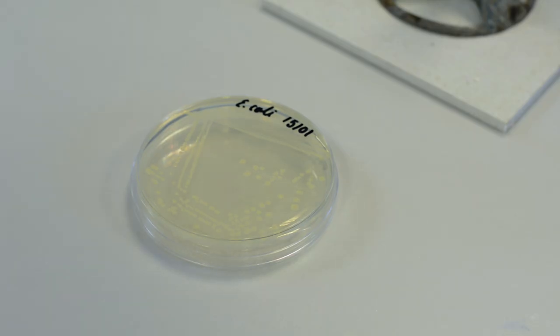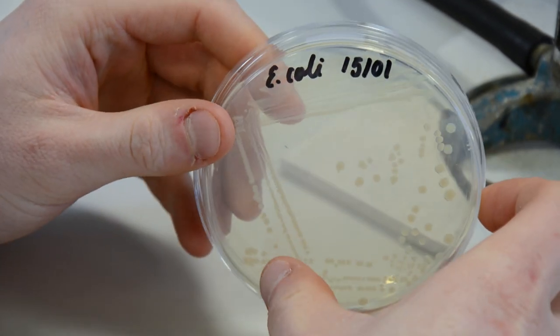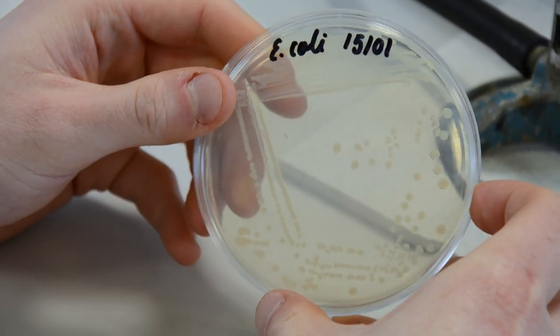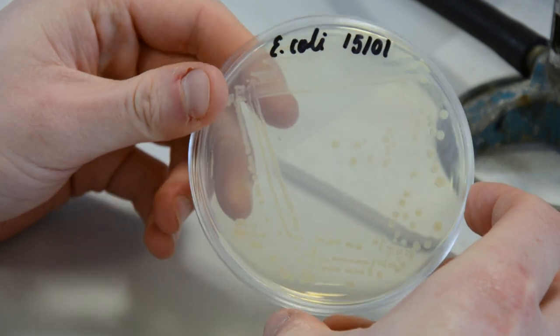After incubation, there is a pattern consisting of bacterial growth. As the distance from the initial inoculum increases, single colonies are visible. Single colonies originate from a single bacterial cell. This means that all cells in a single colony are usually identical.